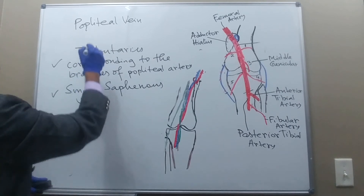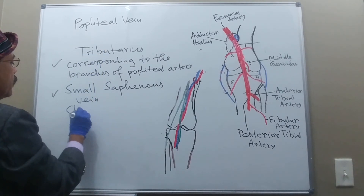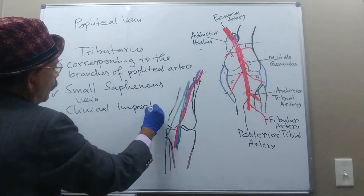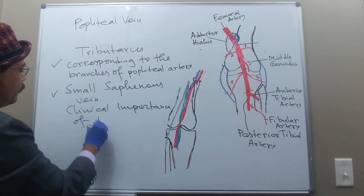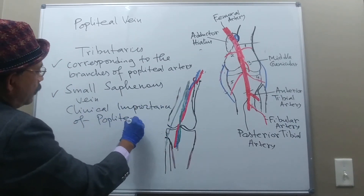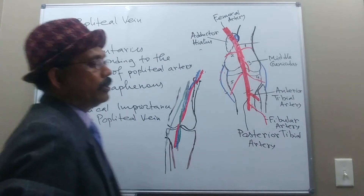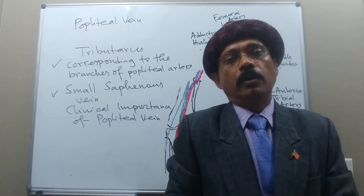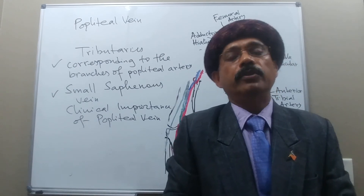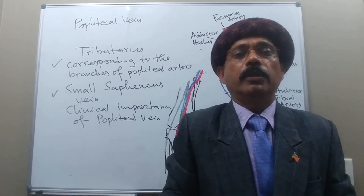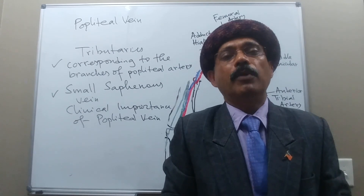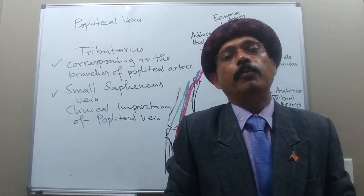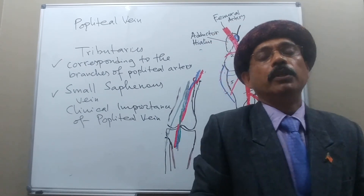The clinical importance of the popliteal vein is that it may be the route of thrombus propagation — it is the route for an embolus from the deep vein of the calf muscle traveling to the heart and ultimately reaching the pulmonary artery, causing pulmonary embolism.